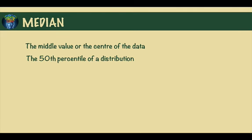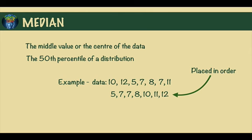So let's look at an example. Here we have the same small data set as before with seven values. The first step is to place these in order. Then we can identify the value at the centre of the data, in this case 8. So the median for this data set is 8.